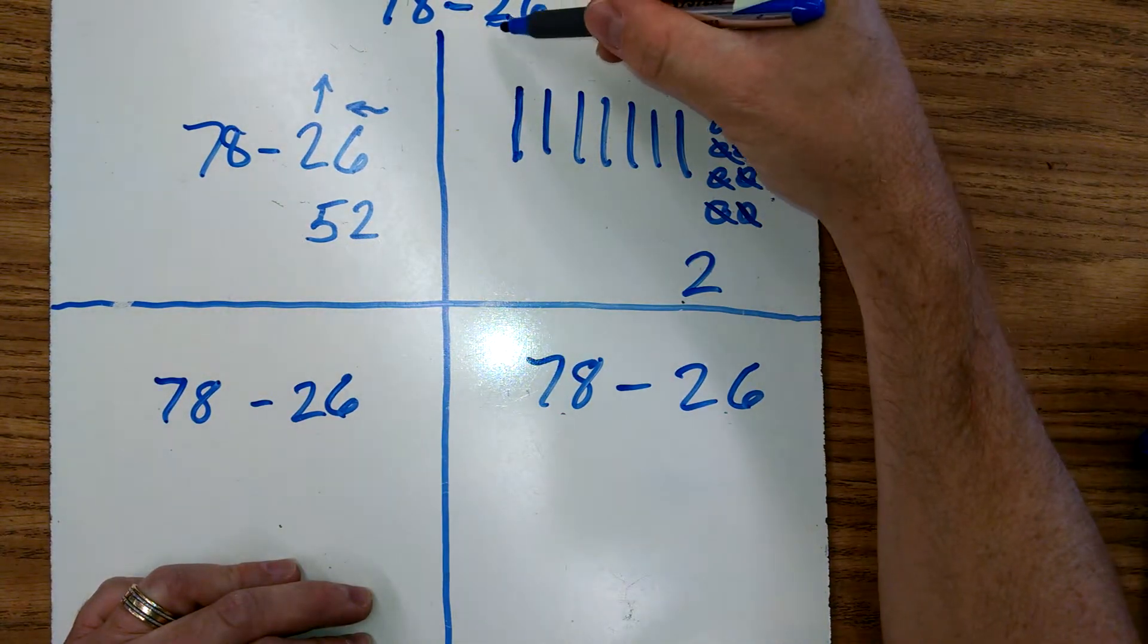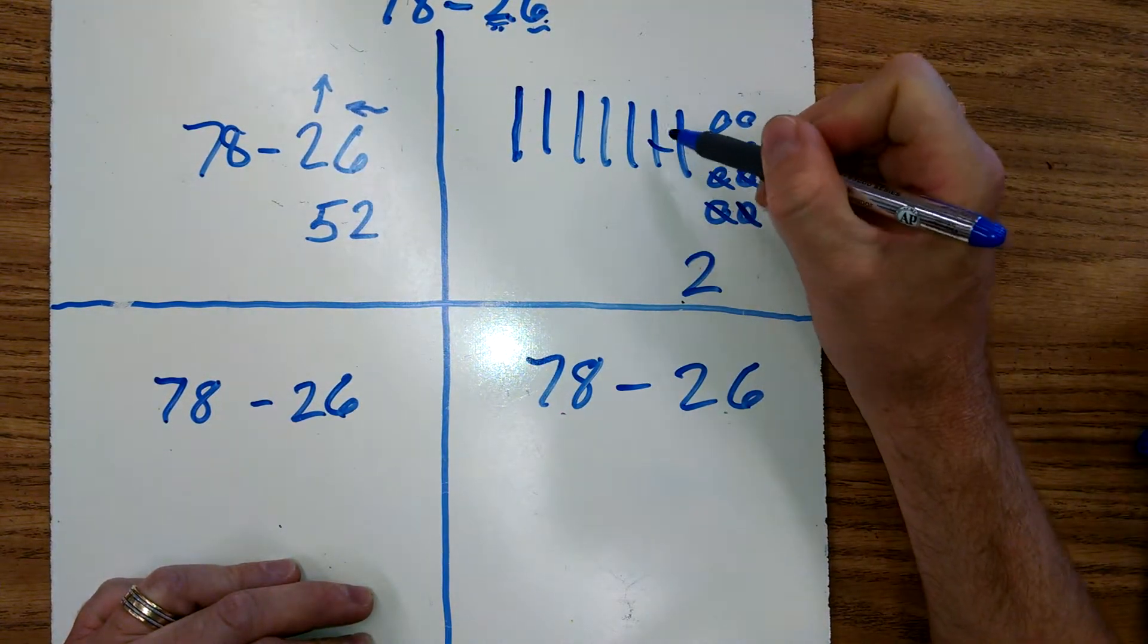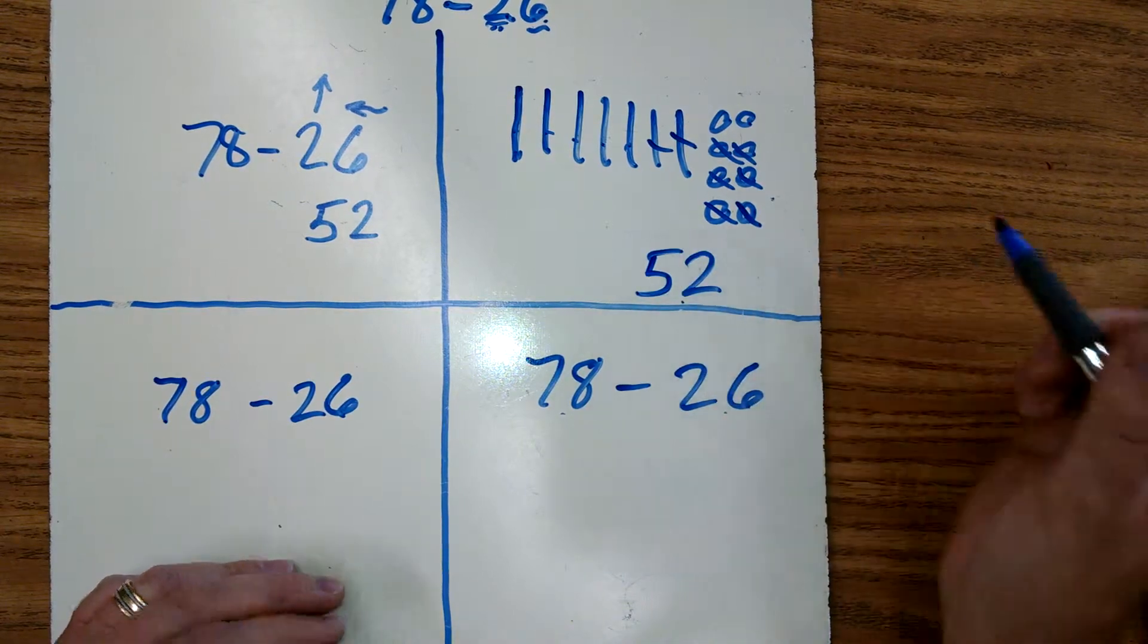And now we've got to remember to take our tens away. We can't just leave this. So now we're taking away two tens. One, two. And that leaves us with one, two, three, four, five tens. Now we have 52.